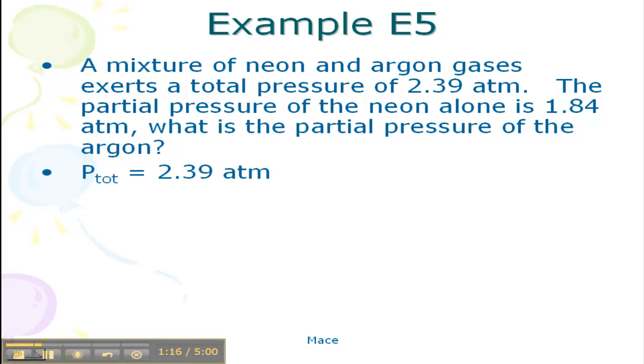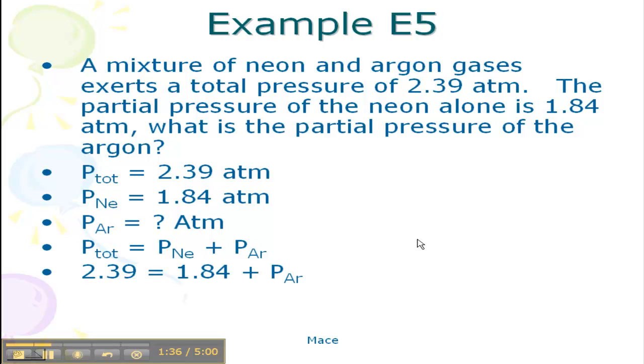So what do we know? We know that the total pressure is 2.39 atm. We know that the pressure of the neon is 1.84 atm. We know that our formula should look like this. The total pressure is equal to the pressure of neon plus the pressure of argon. So if we rearrange our formula, we get a pressure for argon of 0.55 atm.